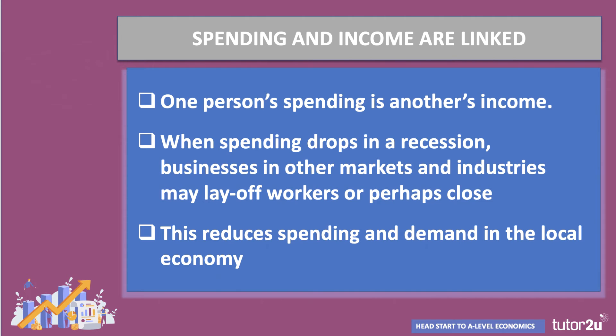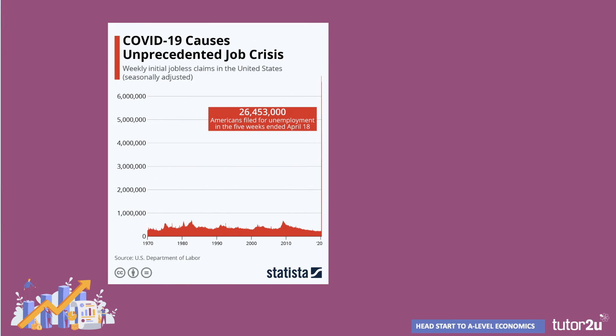When spending falls in a recession, businesses in other markets and industries may suffer and have to lay off workers or perhaps even close. And as businesses lay off workers and employment contracts, this then reduces spending and demand in the local economy, because one person's spending is somebody else's income. Over 26 million people in the United States have already filed for unemployment welfare assistance just in the last six weeks — this is a quite staggering chart.